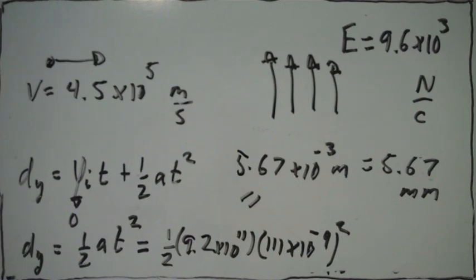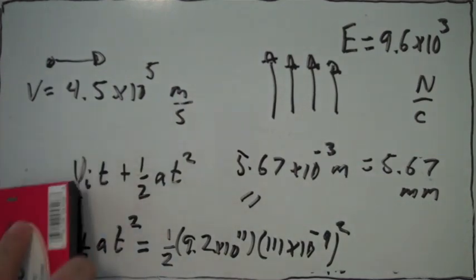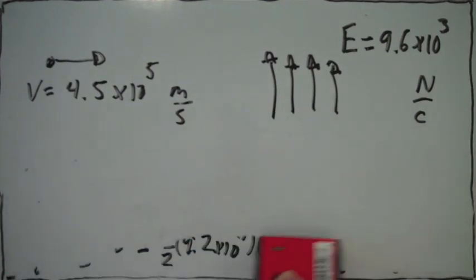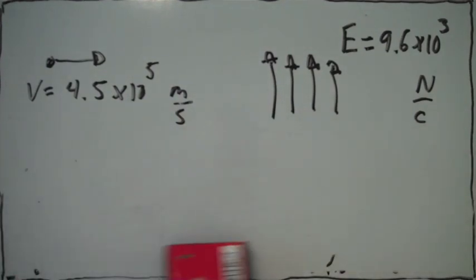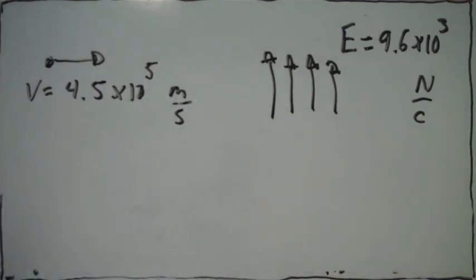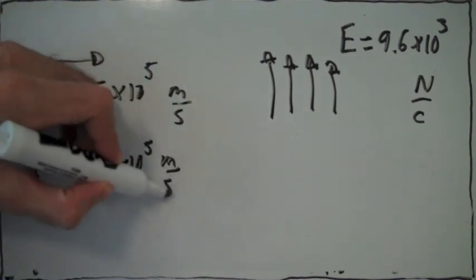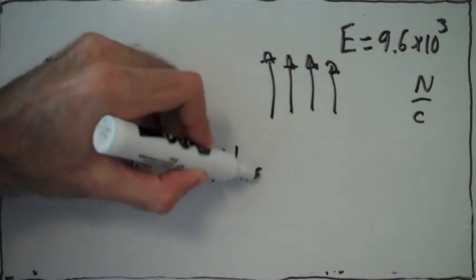Now the problem asks us what is the horizontal and the vertical velocity of the proton by the time it has moved 5 centimeters horizontally. The horizontal velocity — the x velocity — is always the same, it's always the initial value, because there was no acceleration in the x direction.